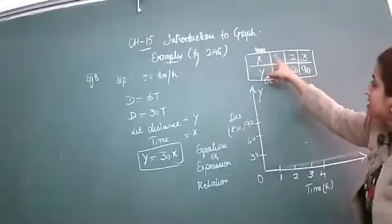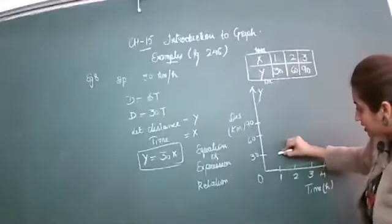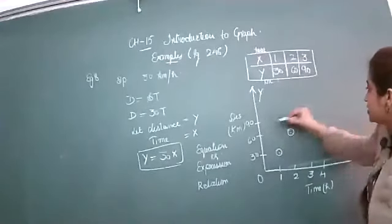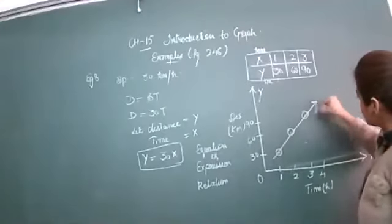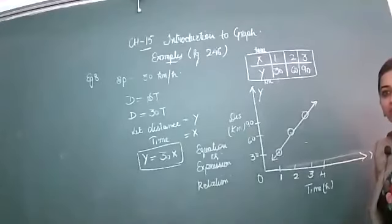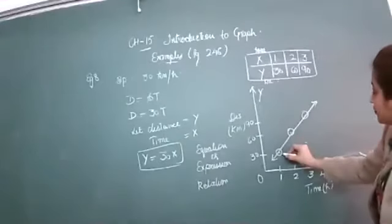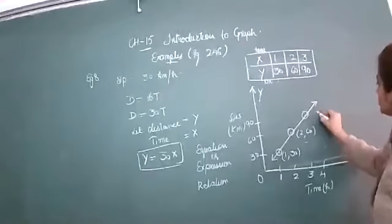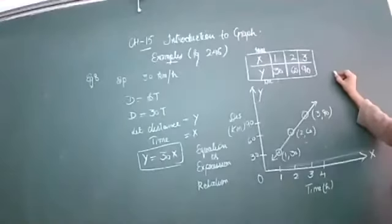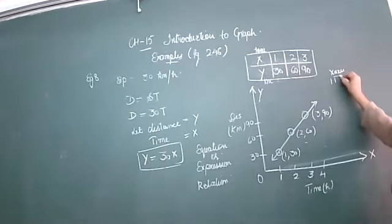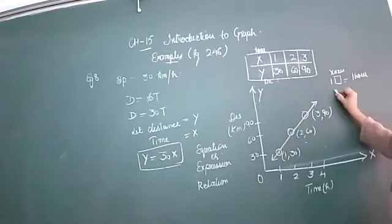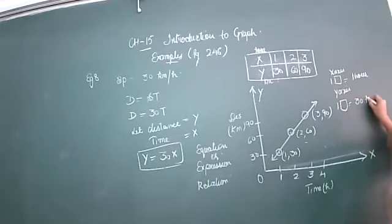For x equals 1, y equals 30 — this is your first point. For x equals 2, y equals 60 — this is your second point. For x equals 3, y equals 90 — this is your third point. This is your linear graph. You can write coordinates as (1,30), (2,60), (3,90). Write the scale: x-axis one box equals one hour, y-axis one box equals 30 kilometers.